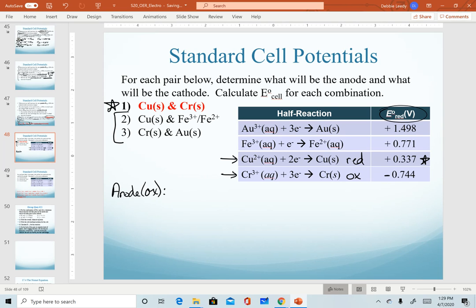So my anode where oxidation occurs will be the chromium half reaction. Chromium will be oxidized to the three plus ion and it will lose three electrons. That will now have an oxidation potential of a positive 0.744 volts.